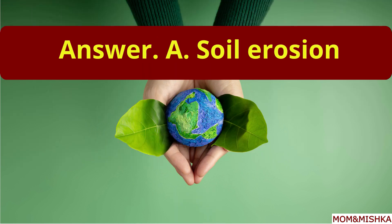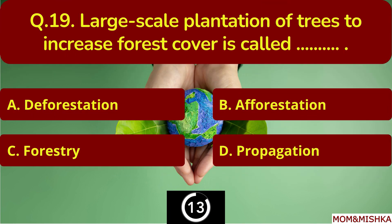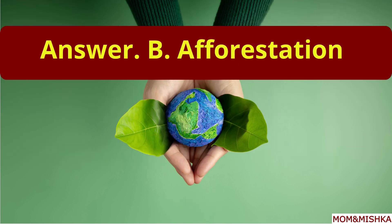Its option A — soil erosion. Large-scale plantation of trees to increase forest cover is called blank. Option B — afforestation.